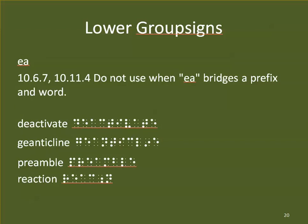One more special thing about EA: we do not use the EA contraction when it bridges a prefix and a word. When it's a suffix and a word, it's okay — but not a prefix. So deactivate, geanticline, preamble, and reaction all spell out E-A because those are prefixes added to a root word.